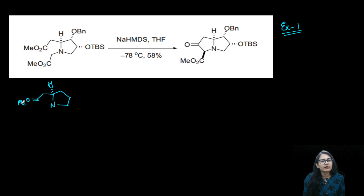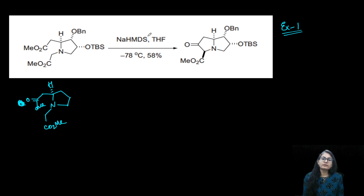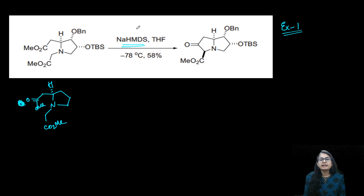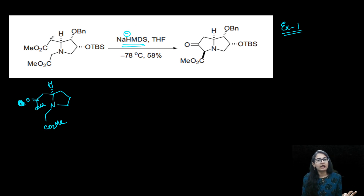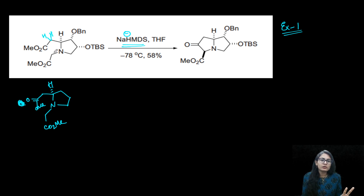So we have the OMe group here and CO2Me on the other side. The product is already given — you have a hexamethyl diacetyl base over here and it's going to take up a proton. Now we are having two enolizable esters — it can take up a proton from here or from here. Both of these are enolizable ester groups.